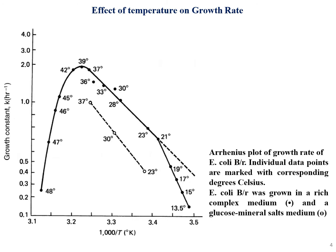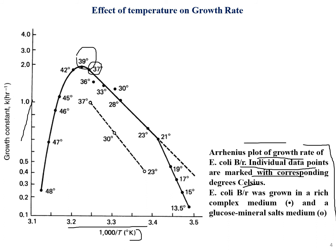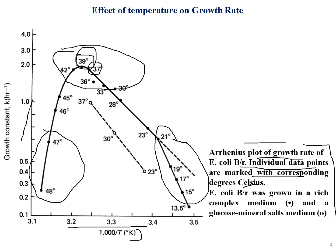Moving on, we have a graph showing the effect of temperature. This is an Arrhenius plot of growth rate for E. coli, with individual data points marked with corresponding temperatures in degrees Celsius. Growth occurs best at 39°C, which is the optimal temperature. At lower temperatures growth is less feasible, and at higher temperatures growth decreases extensively. At this optimal temperature the growth rate is maximum; above it leads to fatality.